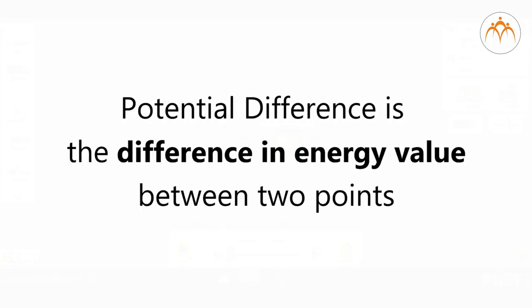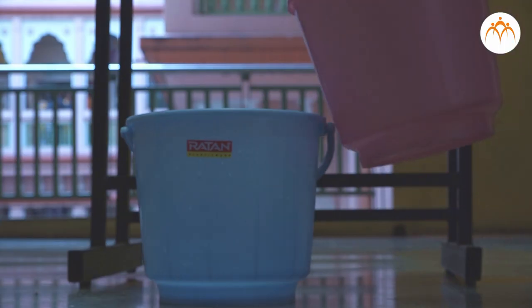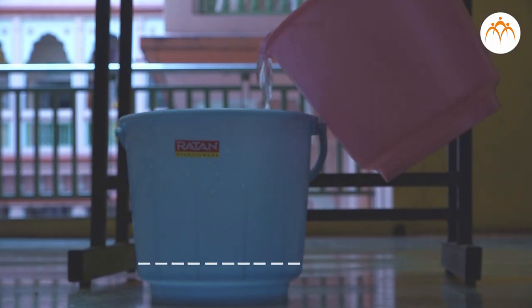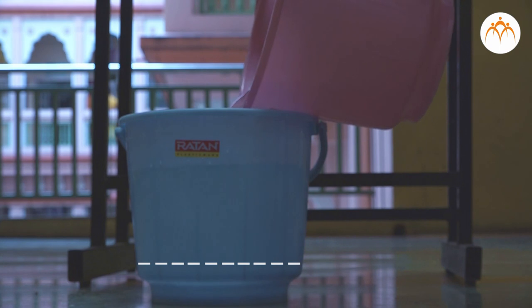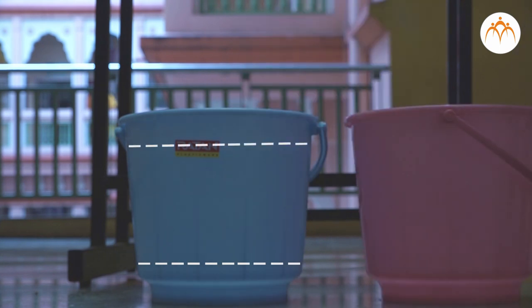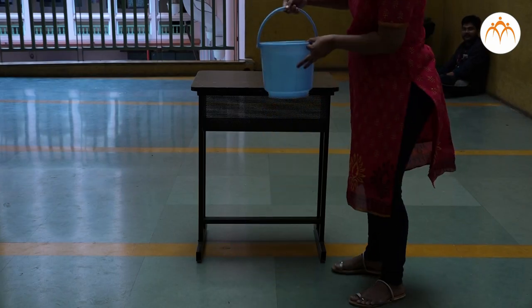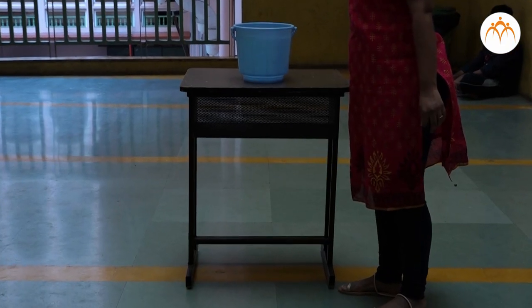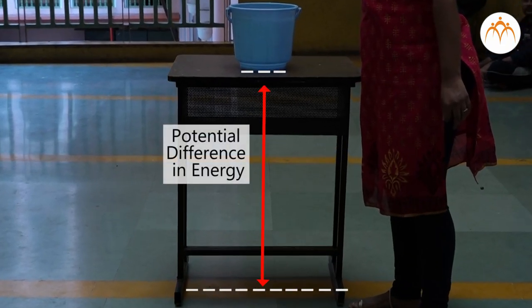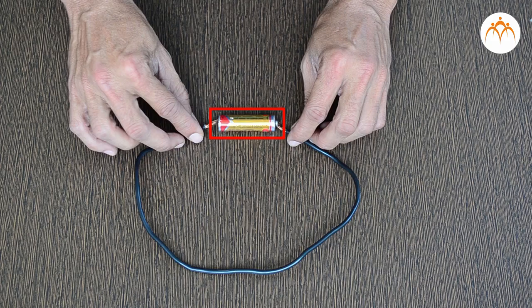Potential difference is the difference in energy value between two points. Let's take this bucket full of water. There is a potential difference of pressure between the top and bottom of the bucket. If I lift the bucket onto this table, there is a potential difference in energy between the height of the bucket and the ground.